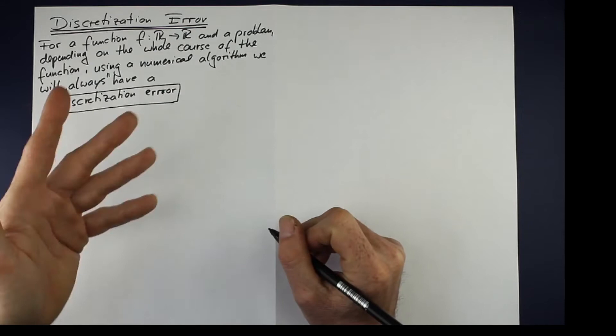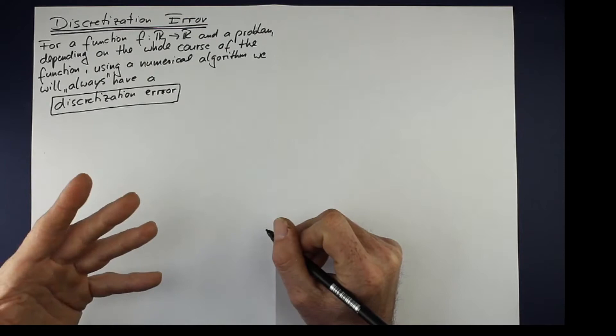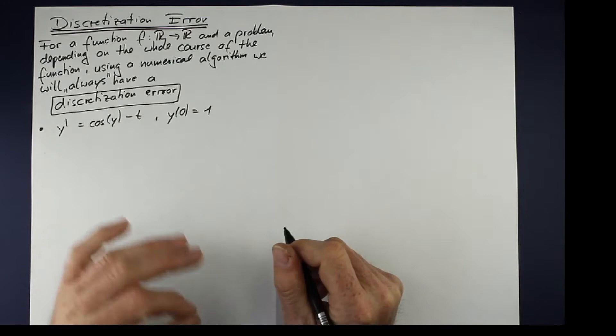To better understand that, let's talk about two very short examples. This is an initial value problem. And what do we have?